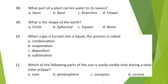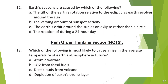Question 11: Which of the following parts of the sun is easily visible only during a total solar eclipse? Look at the options and choose your answer. Question 12: Earth's seasons are caused by which of the following? Look at the options and choose your answer.